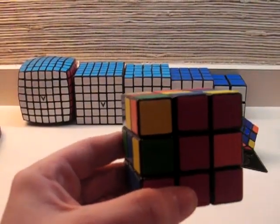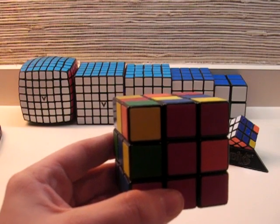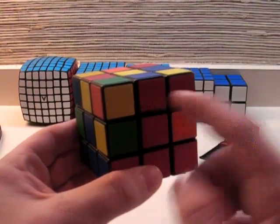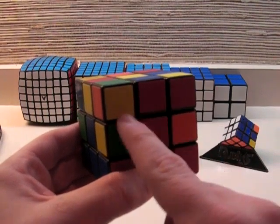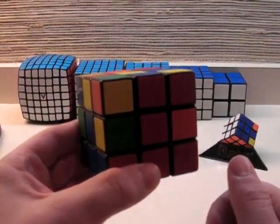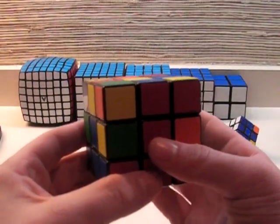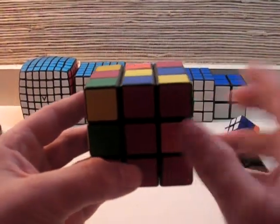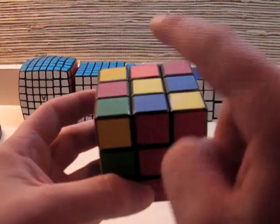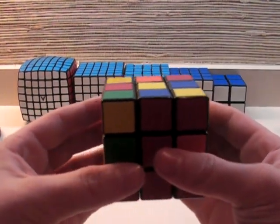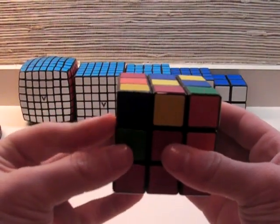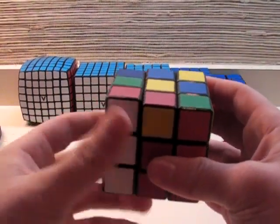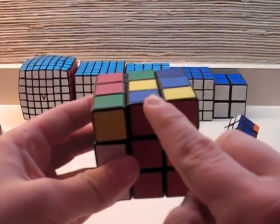And what you want to do is perform the following algorithm. This algorithm will move the piece to the left. So what you want to do is hold it in front of you like this. So this red becomes your front face, and yellow is your top face. You want to do a U prime, moving your piece right here. L prime, U. That moves your edge back.